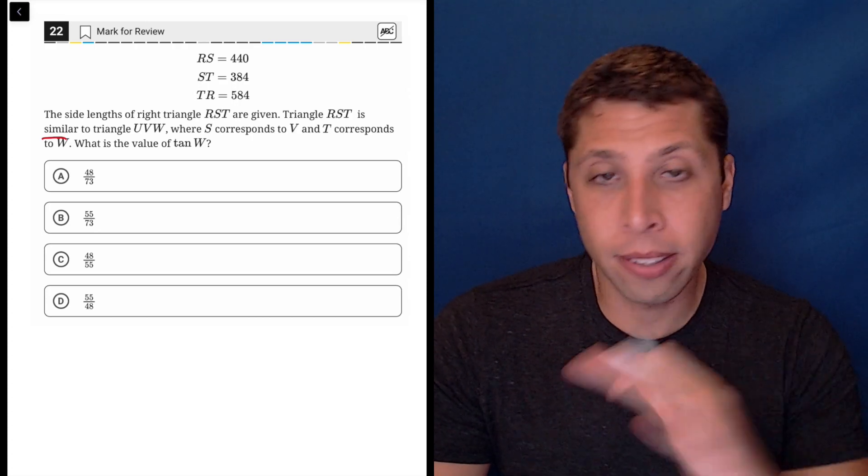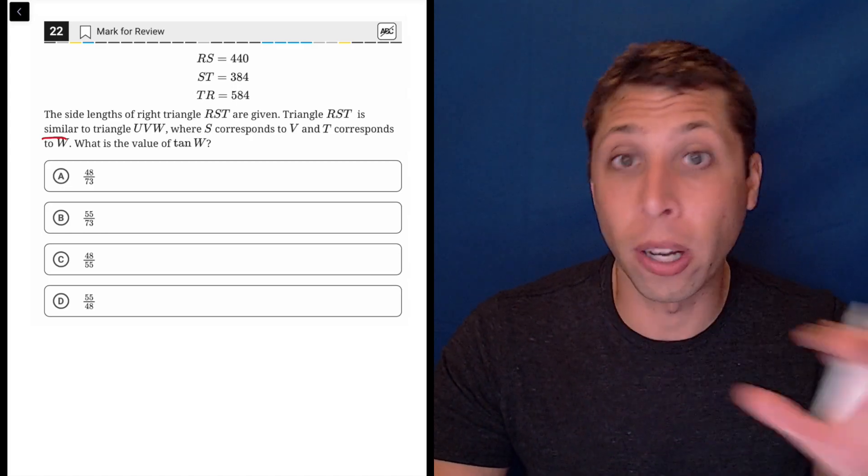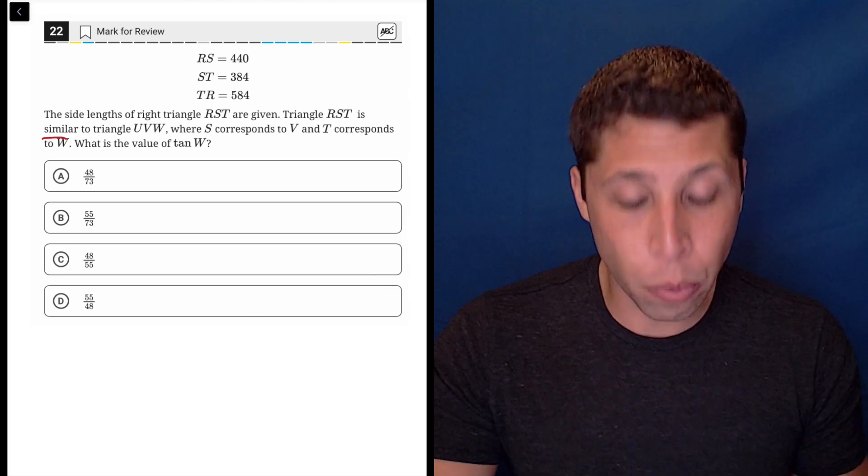If they're similar, then the sides are going to correspond in a way that we can just kind of do the trigonometry with the one triangle and it'll work out for both. So let me show you what I mean here.